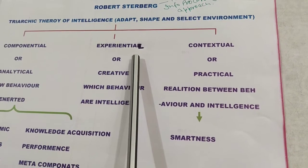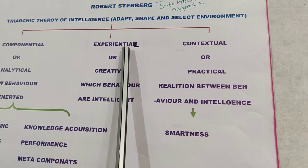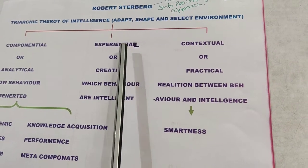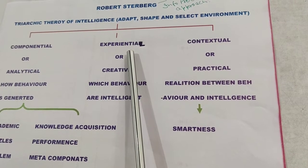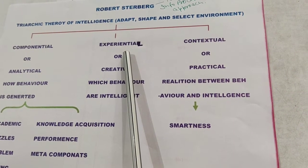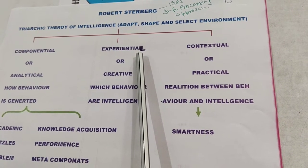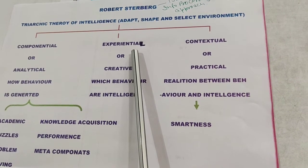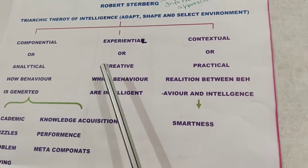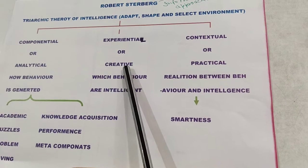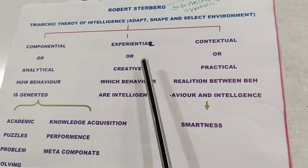The second type is experiential intelligence, also called creative intelligence. As the name suggests, knowledge and intelligence come from experiences, and this intelligence develops with age. We study it in two parts: gaining knowledge from experiences, and using past experiences when facing a new problem. Using past experiences to learn new theories, make new inventions and discoveries — that is experiential or creative intelligence.